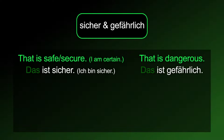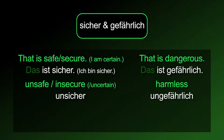The adjective sicher can also be used when being certain about something: Ich bin sicher. The prefix un- can be added to both of the adjectives in order to get the opposite meaning: Unsicher. Ungefährlich.